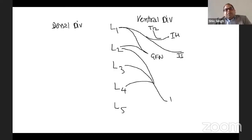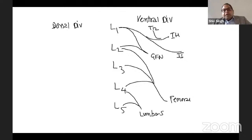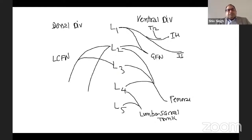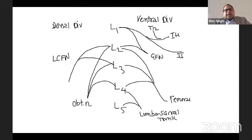The L2, L3, L4 ventral divisions form the obturator nerve — not the femoral. The dorsal division forms the femoral nerve, not the ventral division, so that was wrongly labeled in the diagram. L2 and L3 dorsal divisions also form the lateral cutaneous femoral nerve, so that should be the lateral cutaneous and femoral nerve, not the obturator.